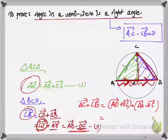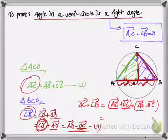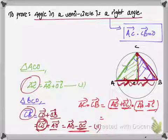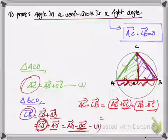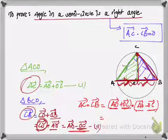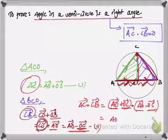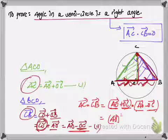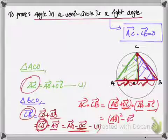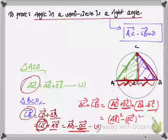This is of the form (A + B)(A − B), and we can apply the algebraic identity that (A + B)(A − B) = A² − B², where A corresponds to AO and B corresponds to OC.